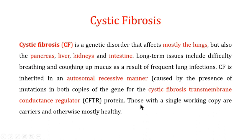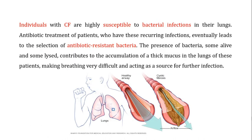Those with a single working copy are carriers and are otherwise mostly healthy, as is commonly the case in recessive genetic disorders — if you have one single copy you are considered a carrier and mostly do not show symptoms. Patients with cystic fibrosis are highly susceptible to bacterial infections in their lungs, the reason for which will be clear in the next slide.